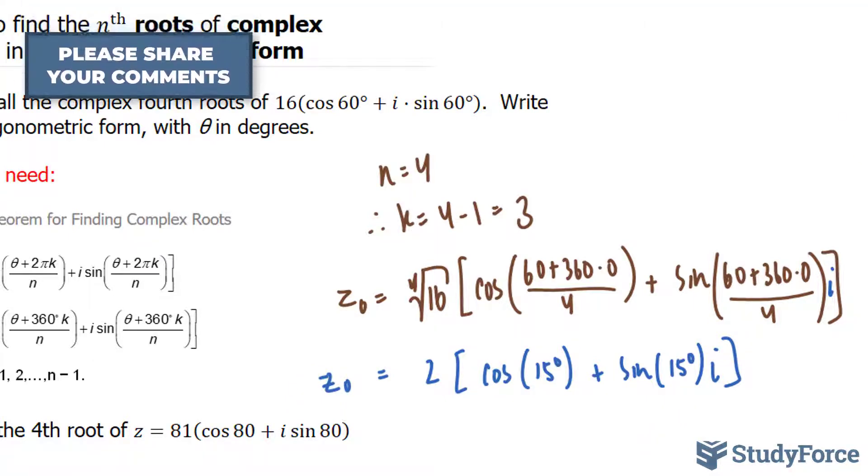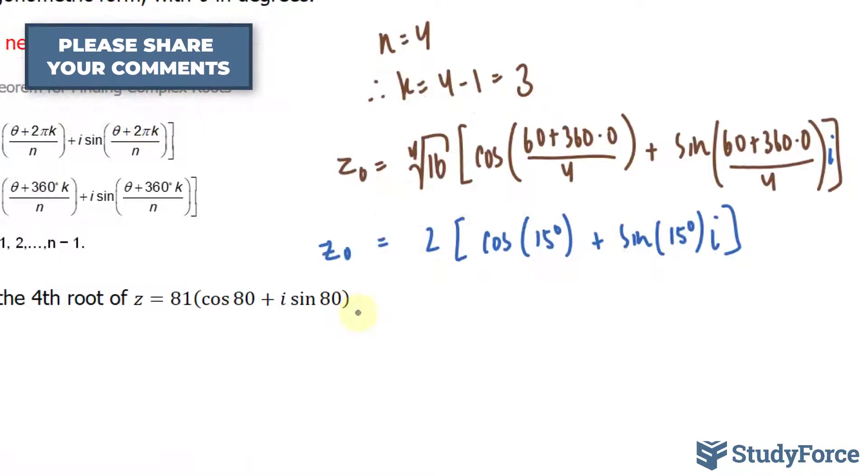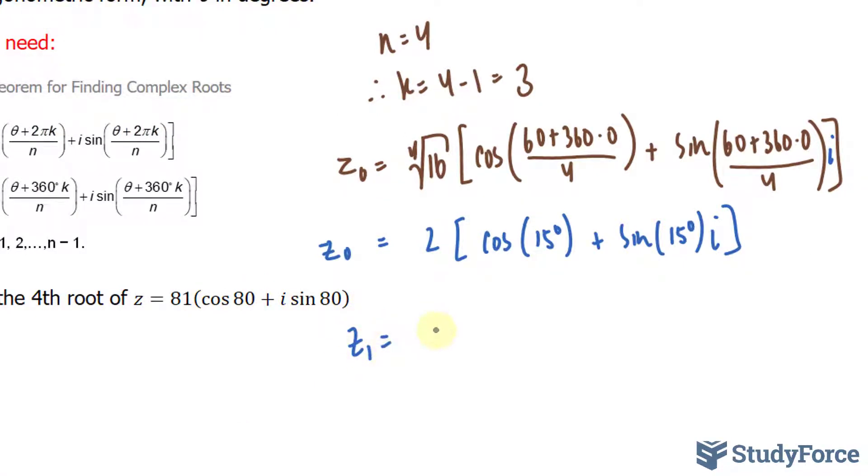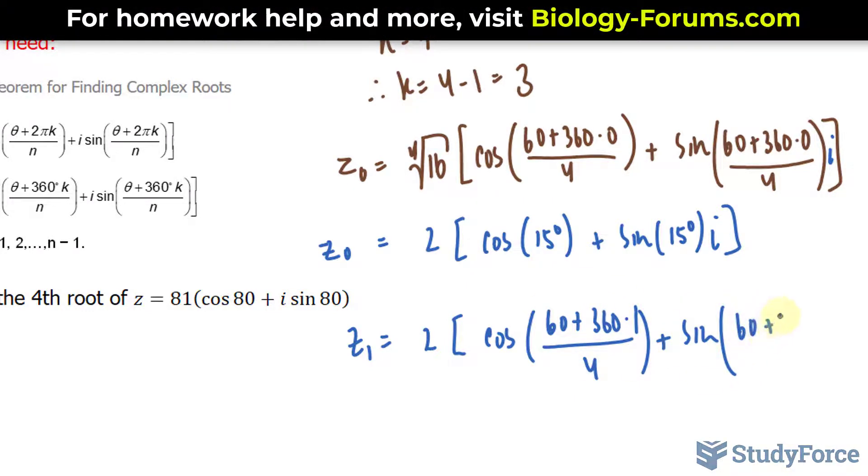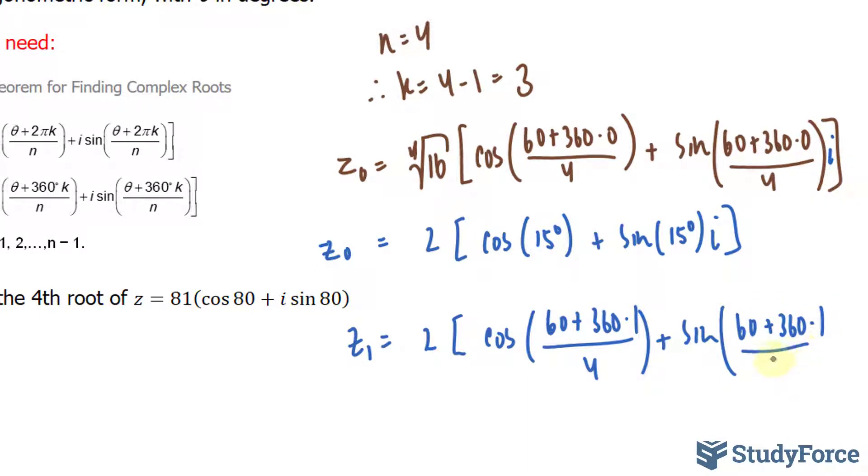We have to do this for each k value, so I'll show you the next k value. We're at z₁, the radius is still 2. Now we have cosine 60 plus 360 times the k value of 1, divided by 4, plus sine the same expression, 60 plus 360 times 1, divided by 4, times the imaginary unit i.